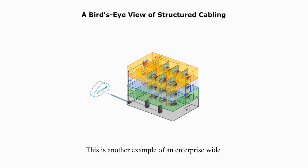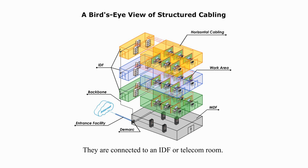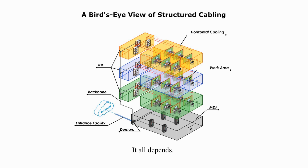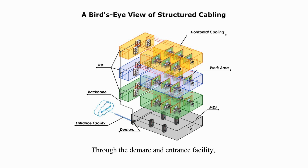This is another example of enterprise-wide structured cabling in a multi-story building. The building has four floors, and each of the top three may have one or two smaller local area networks. They are connected to an IDF or telecom room. You may have several telecom rooms or just one IDF — it all depends. Through backbone cabling, all IDFs are interconnected and joined in an MDF on the first floor. Through the DMARC and entrance facility, the whole network is connected to the Internet.